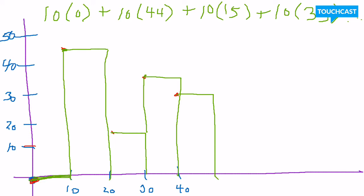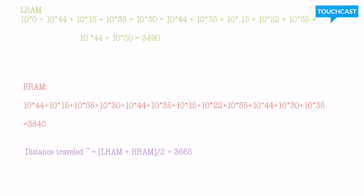I'm going to show the calculations I make for RRAM. I'm going to show you the average, which you can actually already see printed in the video. Remember I was asked to average the LRAM approximation and the RRAM approximation to get my final approximation of distance traveled, which is 3665 feet.